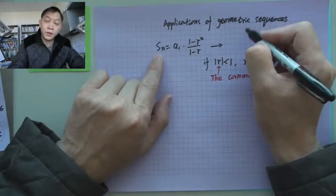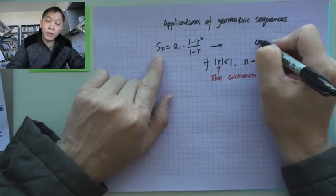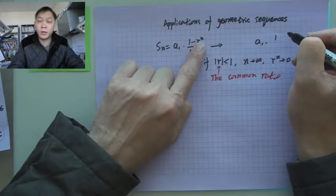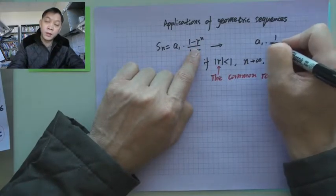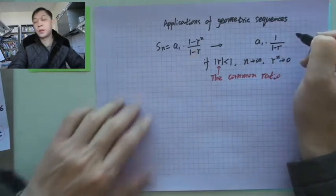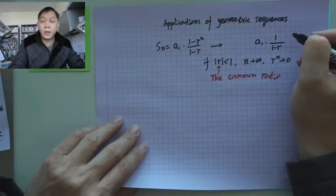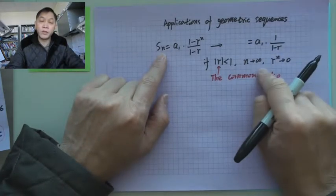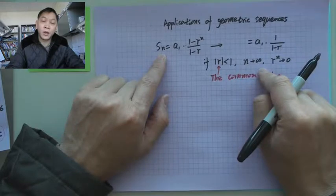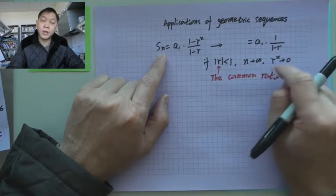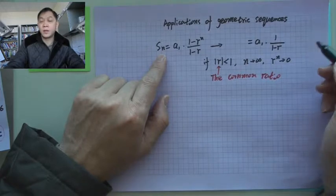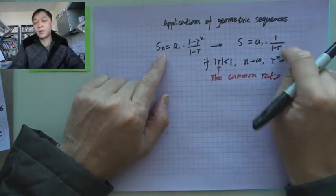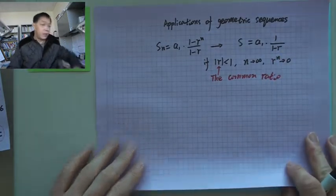When n goes to infinity, then we will have a₁ upstairs is just 1, because this r to the n goes to 0. Upstairs is 1. And then this sum is no longer a finite sum, because n goes to infinity means more than n terms. It goes bigger and bigger, infinite. Then we have S without n. This is the formula.